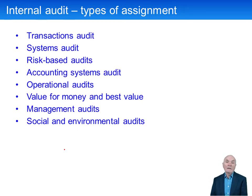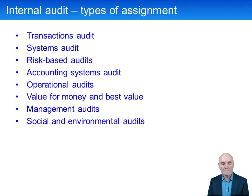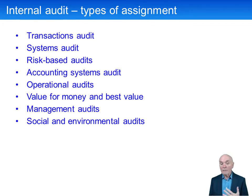Systems audit usually refers to the IT system — what are the controls there? Risk-based audits: have we covered all the risks? Are there any risks that have been identified, maybe noted on the risk register, but still not very much has been done about them to reduce that risk to something which is acceptable? Accounting systems audit: are there holes in the internal control system of the accounting system which might mean, for example, that a purchase invoice might be paid twice, or that somebody's overtime could be paid twice? There need to be mechanisms to prevent double payments of these sorts.